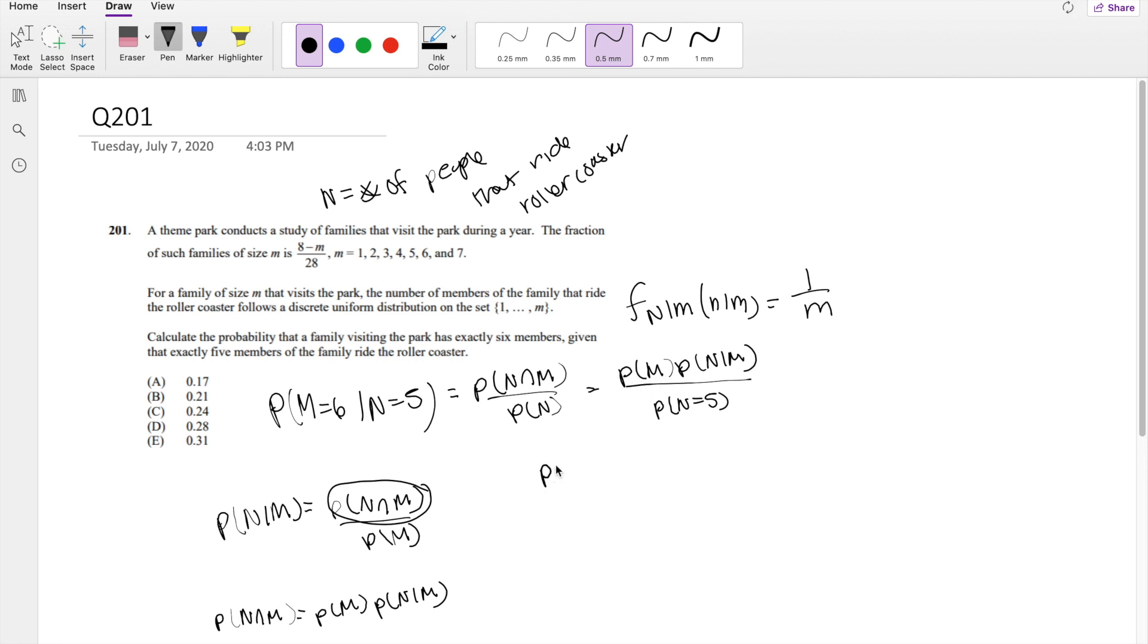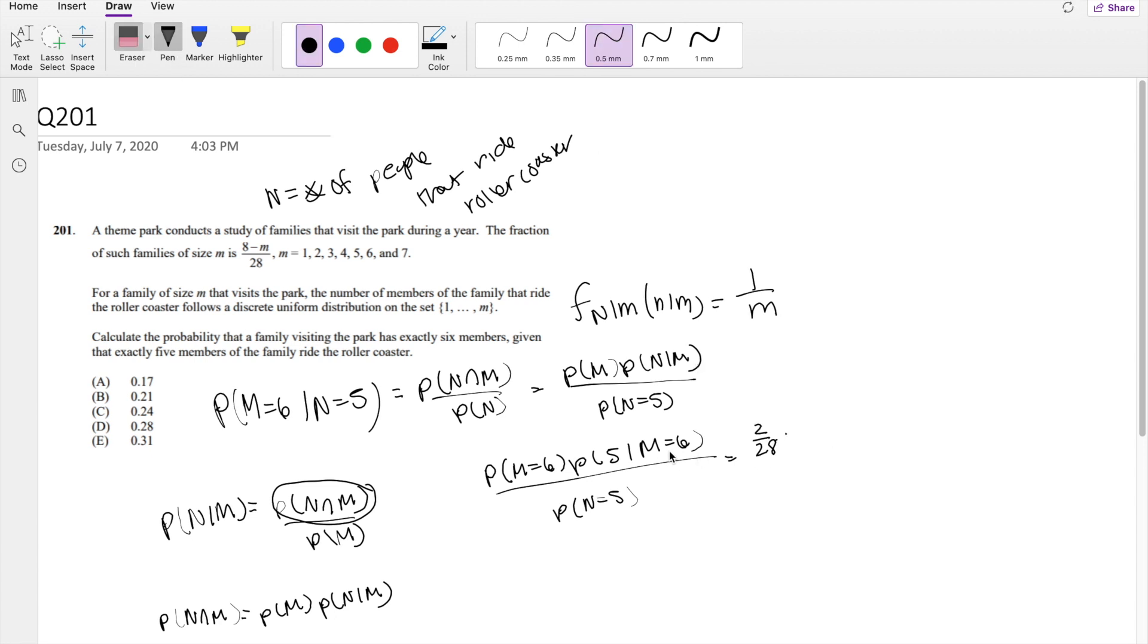But then we were looking for specific areas. We're looking for when specifically n is equal to 5 and when m is equal to 6. So I'm gonna write that down real quick: probability that m is equal to 6 times the probability that n equals 5 given m is equal to 6 divided by the probability that n is equal to 5.